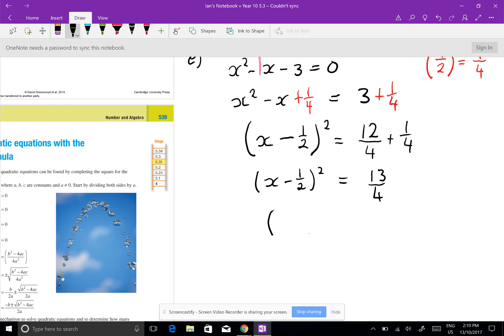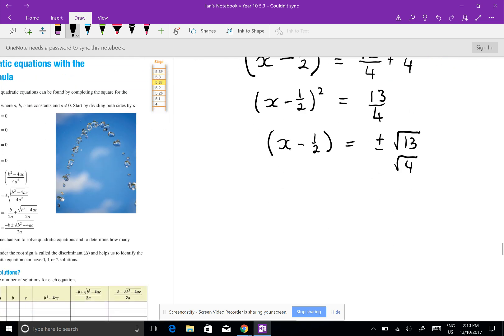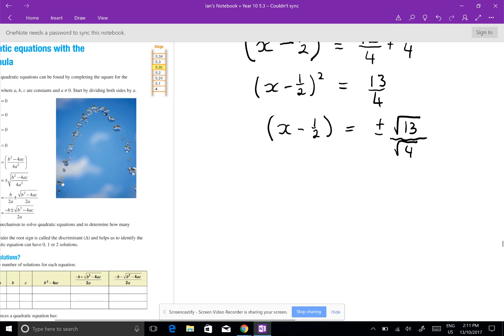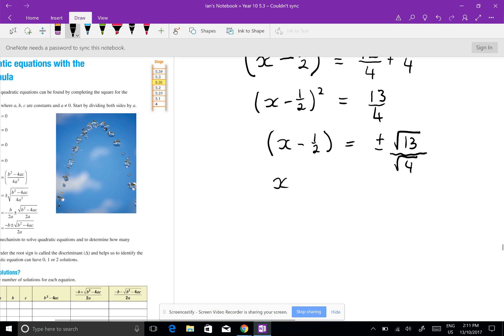Square root both sides, I get x minus a half equals plus or minus root 13 over root 4. It's another way to think about it. I get x minus a half, and I don't need those brackets so I'll just get rid of those.